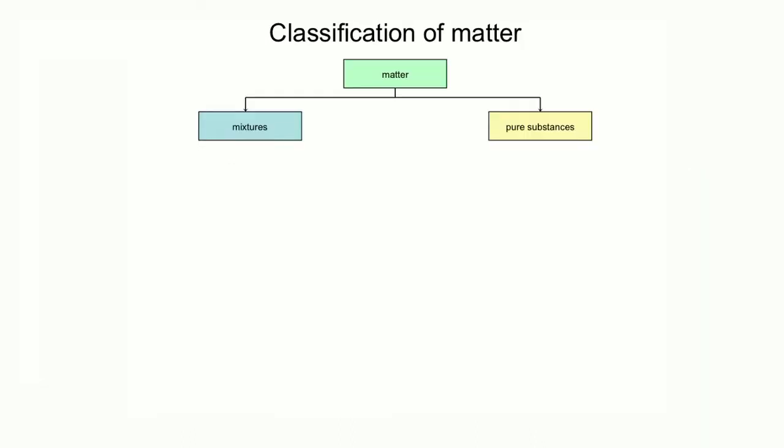This chart summarizes the classification of materials. Matter can be subdivided into pure substances and mixtures. Mixtures contain pure substances. Mixtures can be subdivided into heterogeneous mixtures. Think about the grains of salt and the grains of sand mixed together. And homogeneous mixtures. Think about the lemonade. In a homogeneous mixture, the ingredients are mixed together homogeneously on a molecular level.